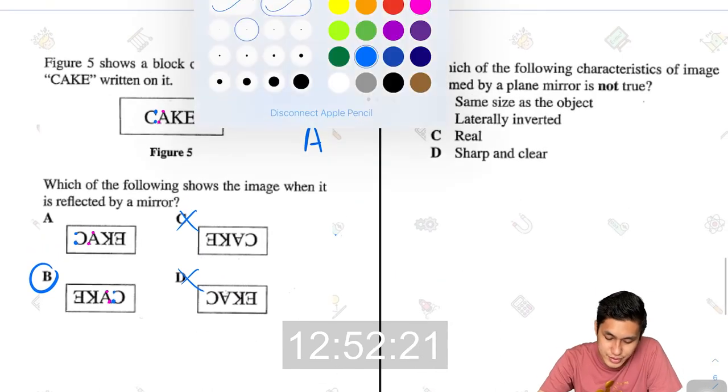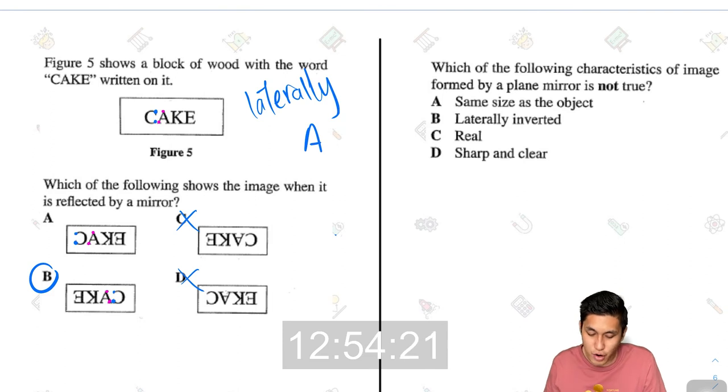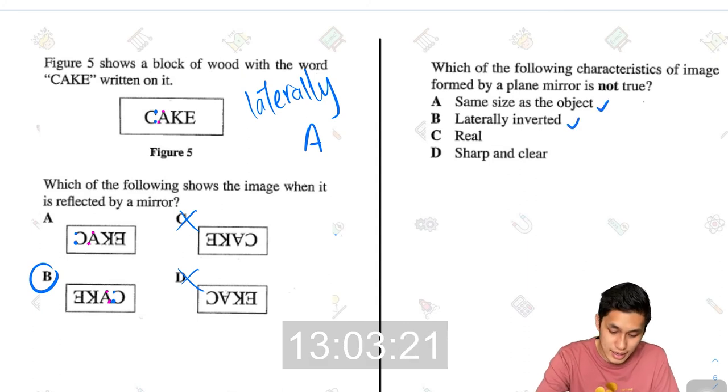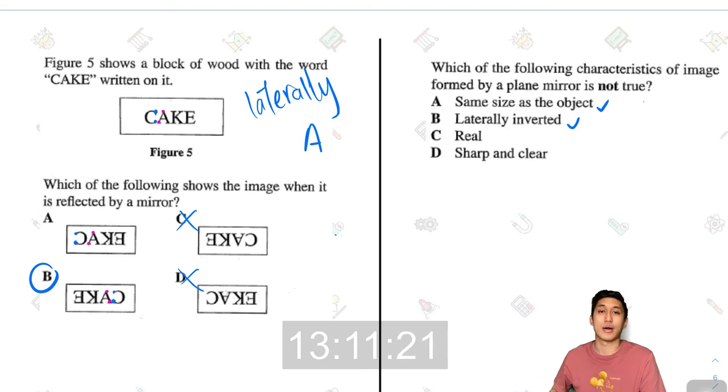Next, which of the following characteristics of image formed by a plain mirror is not true? Image formed by a plain mirror, same size as the object, definitely true. Laterally inverted, we just said that, that's true. And real, real is not true. Because your image will appear inside the mirror, and inside the mirror, that would be a virtual image. So the answer here would be c. Sharp and clear, definitely yes, that's true.